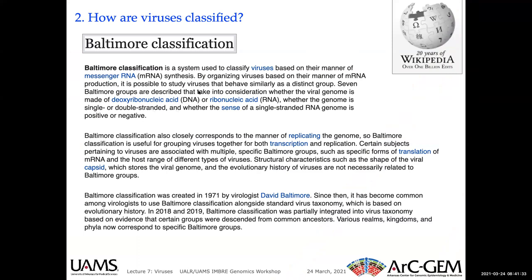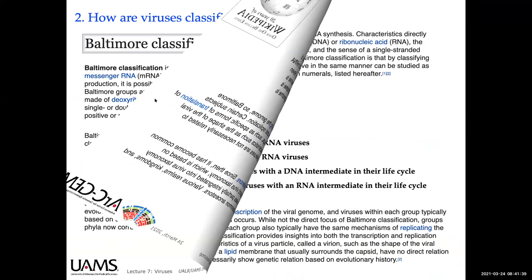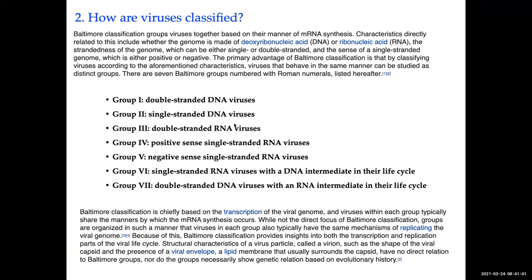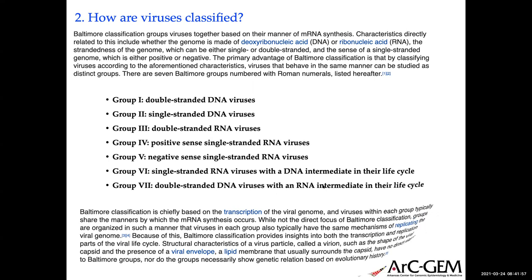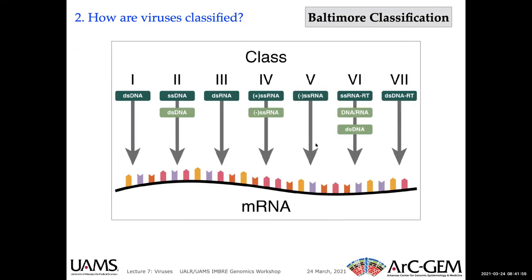There's the Baltimore classification from David Baltimore in the 1970s. You look at whether viruses are double-stranded DNA, single-stranded DNA, double-stranded RNA, positive single-strand RNA, negative single-strand RNA, single-strand RNA with a DNA intermediate, or double-strand DNA with an RNA intermediate. It's really complicated — you have to know a lot about the viruses in order to classify them. So here we have these seven categories.